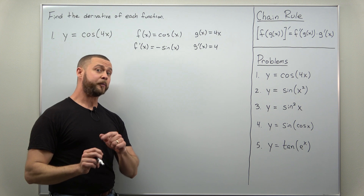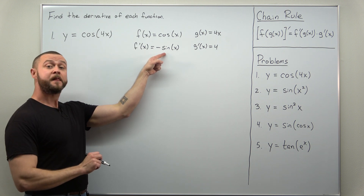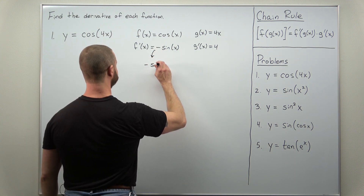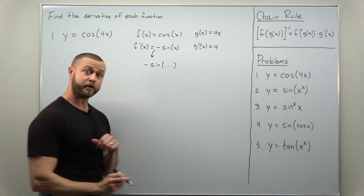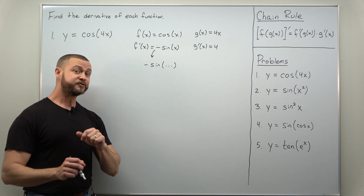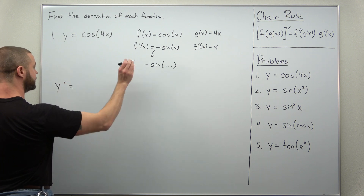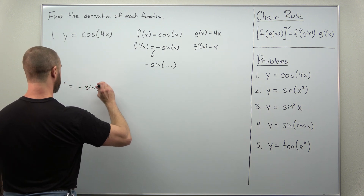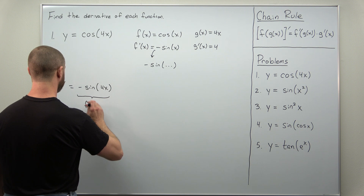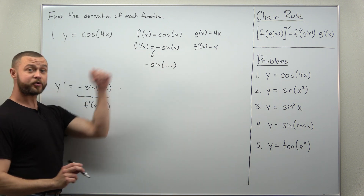Now since this is our first problem on applying the chain rule with combinations of trig functions, let's rewrite f prime with all x's replaced with open parentheses. That looks like negative sine of your input. Inside there we're going to plug g of x — that's your f prime of g of x term, the first part of the chain rule. So 4x goes right inside there, giving us the first term: negative sine of 4x. Then we multiply by the derivative of our inner function, g prime, which is just 4.